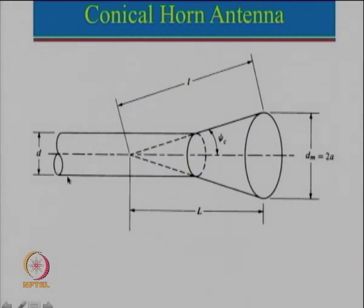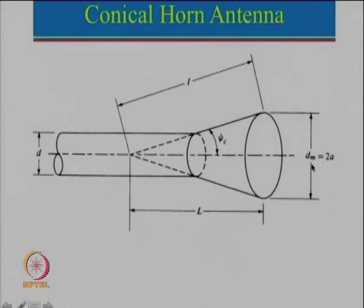A conical horn antenna basically uses a circular waveguide which is then flared. In this particular case we have a small diameter d for the waveguide and then the diameter d_m which is the diameter of the aperture. So we have only one dimension in this case. In case of pyramidal we had dimensions a and b, whereas here we are just increasing the diameter, so we have one less dimension to optimize. This is the length of the horn antenna.